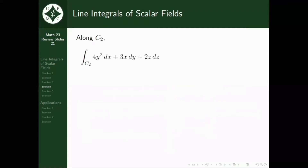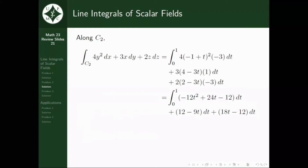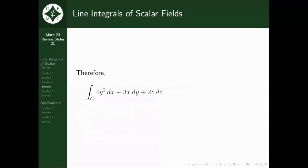Along c2, the line integral equals the integral from 0 to 1 of 4(negative 1 plus t)² times negative 3 dt plus 3(4 minus 3t) times 1 dt plus 2(2 minus 3t) times negative 3 dt, which simplifies to the integral of negative 12t² plus 33t minus 12 dt from 0 to 1, equaling 1 half. Therefore, the given line integral equals 10 thirds plus 1 half, which is 23 over 6.